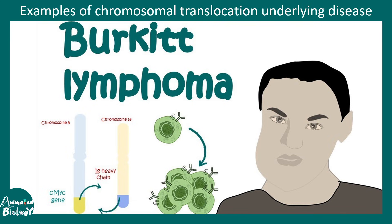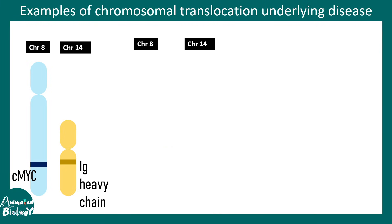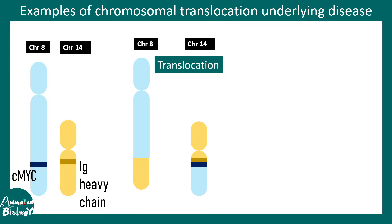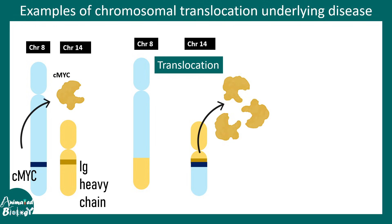There is another kind of cancer, Burkitt's lymphoma, where a translocation happens between chromosome 8 and 14. The genes involved here are the Ig heavy chain and the CMYC gene. The Ig heavy chain is present on chromosome 14, and CMYC is present on chromosome 8. After the segment exchange, the CMYC gene comes into the near proximity of the Ig heavy chain. In a B cell, any lymphocyte would have constitutive activation of these Ig promoters, because they have to produce immunoglobulins.